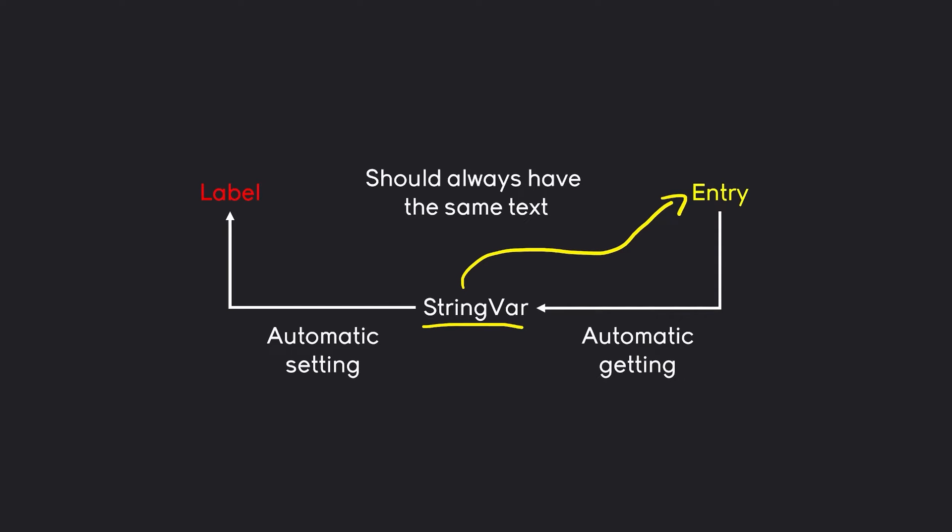A StringVar also sets the value of the entry. So if you had two entry widgets, they could also be connected using a string variable. I think all of this is going to be much easier to understand when we actually implement it, so let's have a look at this in code.